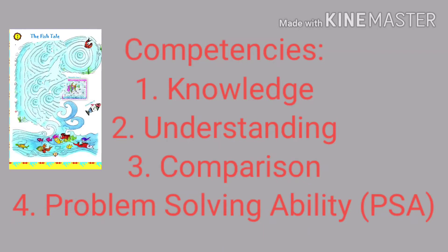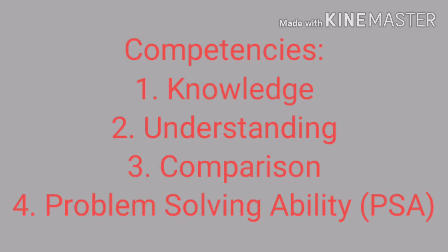The competencies for this chapter are: number 1, Knowledge; number 2, Understanding; number 3, Comparison; and number 4, Problem Solving Ability, also known as PSA.